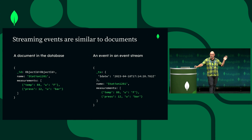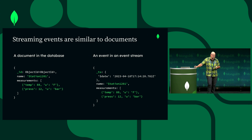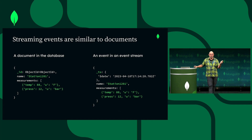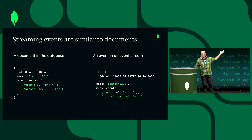A document in the database has a primary key, maybe some indexes, lives in a collection. It's mutable — you can update it. An event is very similar, except it has a timestamp. That timestamp is its primary key, if you will — that's when the event happened. And it's immutable. If you want to change what happened, you have to issue a new event. They look a lot similar — they have the same JSON-like document structure, and they can be complex.